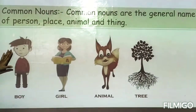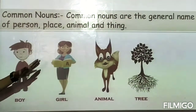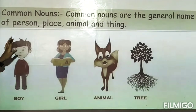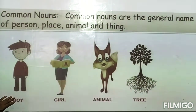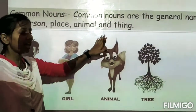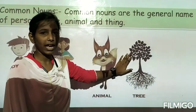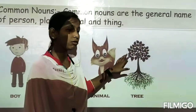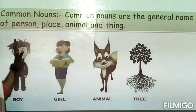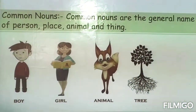For example, if we say 'boy,' that is a common noun because it refers to any boy, not a particular one. Similarly, 'girl' is a common noun. Animals have a common name too. Words like boy, girl, animal, and tree — these are all common names and are called common nouns.